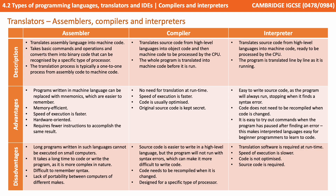The main difference to note is that a compiler needs to translate all of the source code in its entirety, and it all needs to be correct before producing the executable machine code. But with an interpreter we take one line of code, translate it and run it, and then move on to the next.